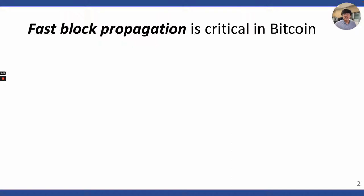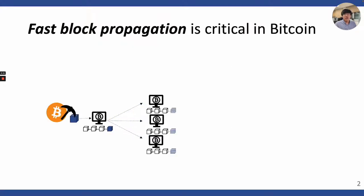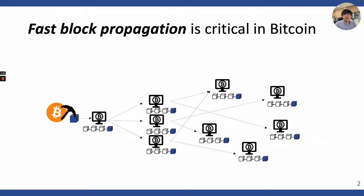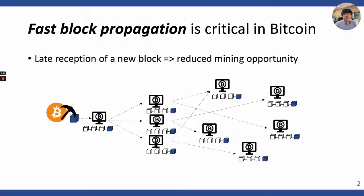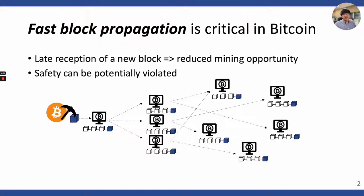In many blockchains such as Bitcoin, when a miner discovers a new block, it propagates it to its other peers. Then the peers propagate the block to other peers again and again, until it reaches all the nodes in the network. Fast block propagation is very critical in blockchain like Bitcoin, because slow block propagation leads to delayed reception of a new block. If miners experience delayed block reception, it can translate to some loss of mining opportunity, because they may waste their mining power seeking for a block with the same height as already mined. Worse yet, slow block propagation can lead to safety violations.